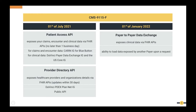The expectation is for each payer organization to expose two main APIs: the Patient Access API and the Provider Directory API. When it comes to the Patient Access API, the intention is to expose your claims, encounter, and clinical data via FHIR APIs. You should basically respond with this data within one business day after you receive it. For claims and encounter data, there's an implementation guide — the Carin IG for Blue Button.